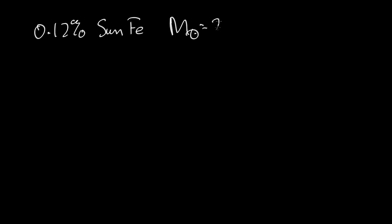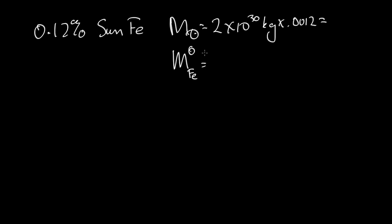We saw that 0.12% of the Sun is iron. Let's think about what that means for how much iron that really relates to. The mass of the Sun is about 2×10³⁰ kilograms. If we multiply that by 0.0012 (or 0.12%), then we find that the mass of the iron in the Sun is quite a considerable amount: 2.4×10²⁷ kilograms of iron.